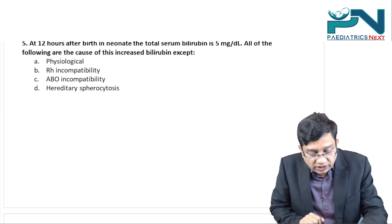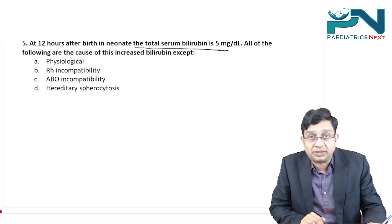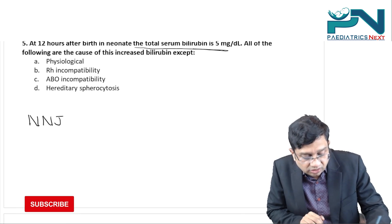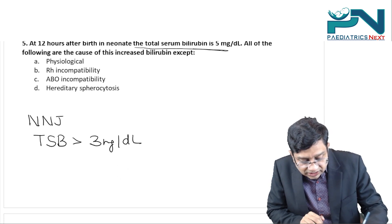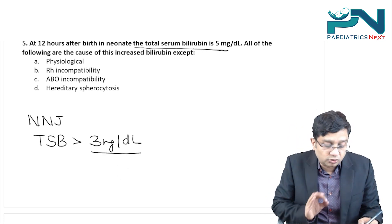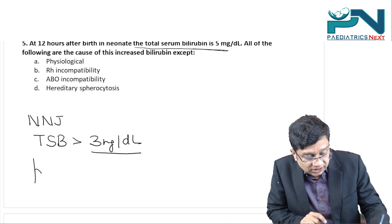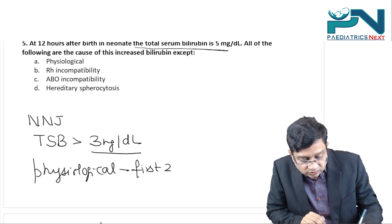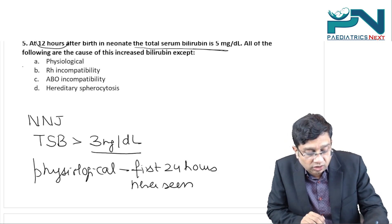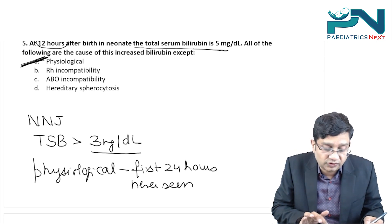At 12 hours after birth, a neonate has total serum bilirubin of 5 mg/dL. All of the following are causes except one. Total serum bilirubin more than 3 mg/dL defines neonatal jaundice. Physiological jaundice never appears in the first 24 hours — so jaundice at 12 hours cannot be physiological. The other causes — Rh incompatibility, ABO incompatibility, and hereditary spherocytosis — can all cause jaundice this early.